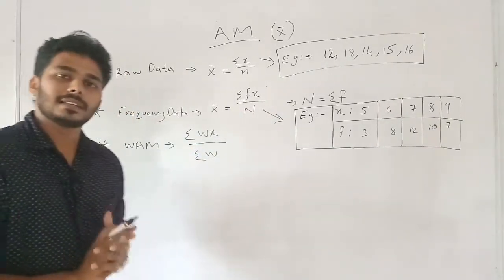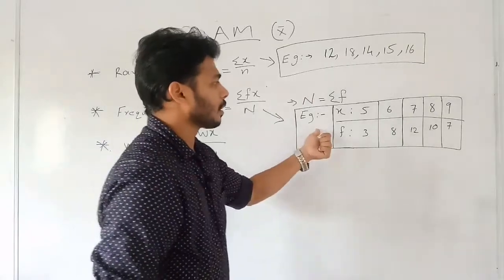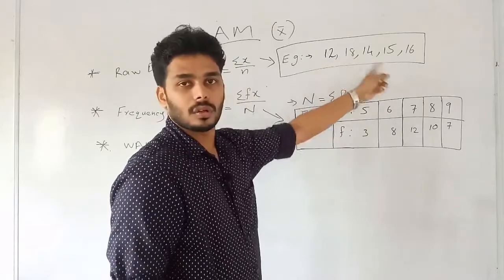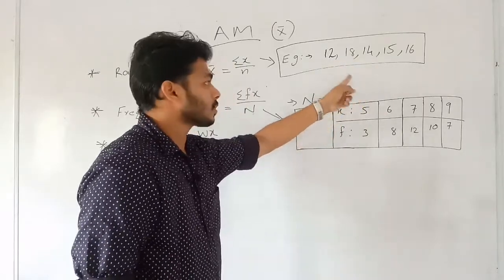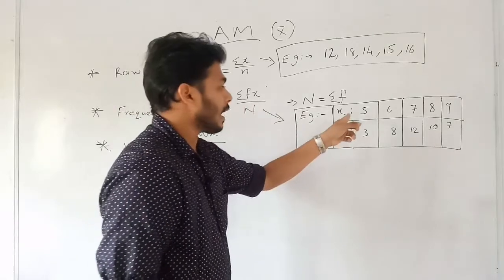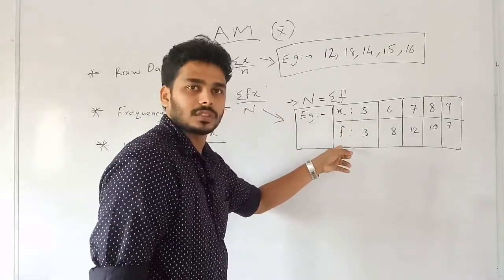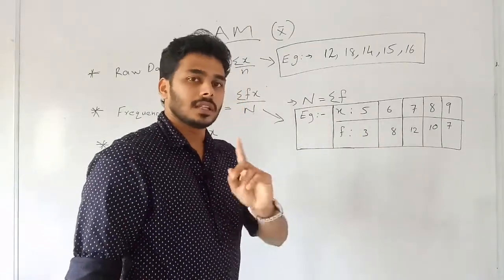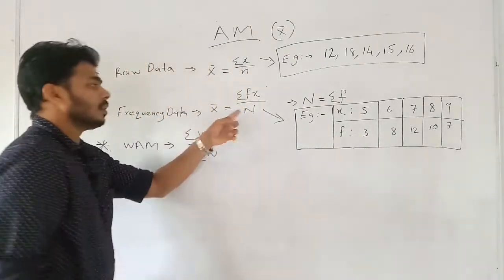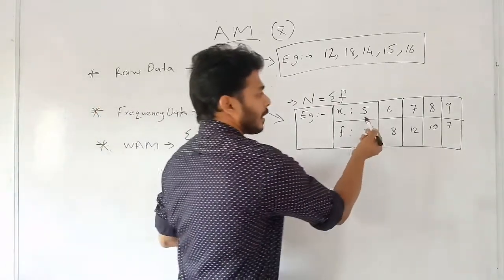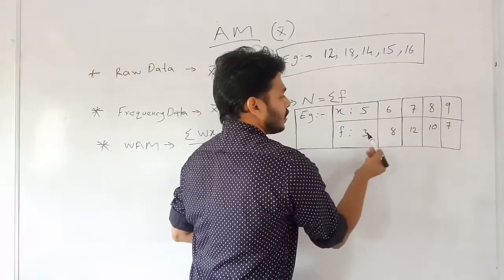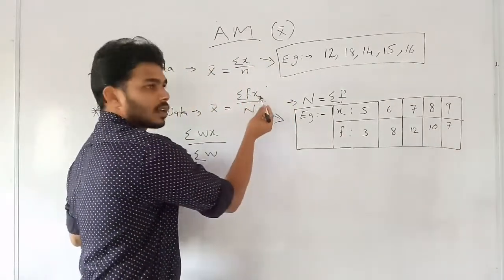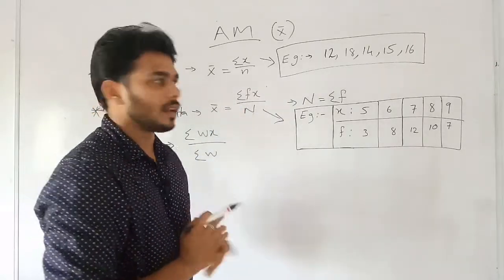For frequency data, we use the equation x̄ = Σfx / N. An example: frequencies are 3, 8, 12, 10, 7. We calculate Σfx and divide by N to find the arithmetic mean.